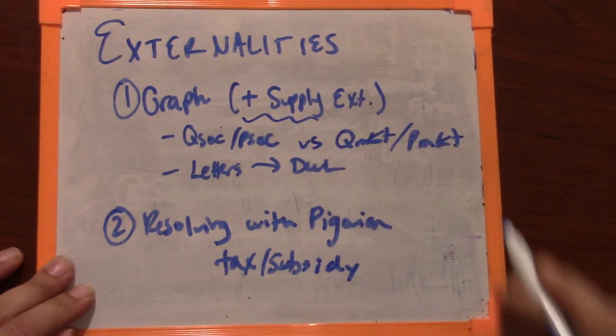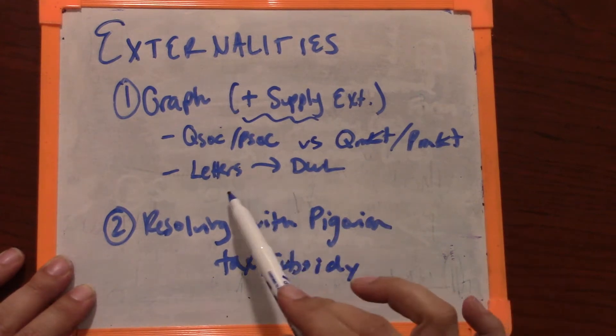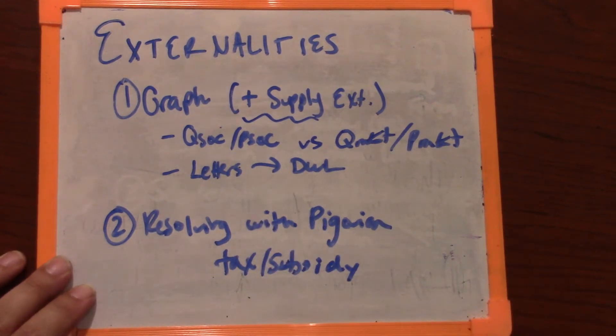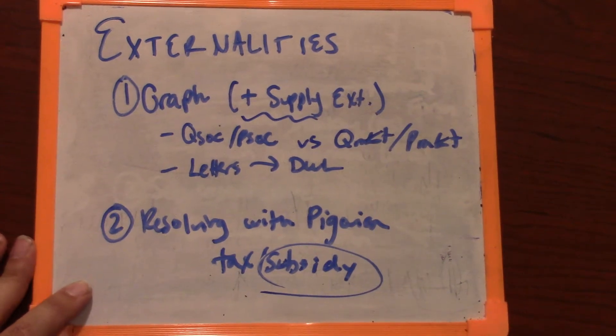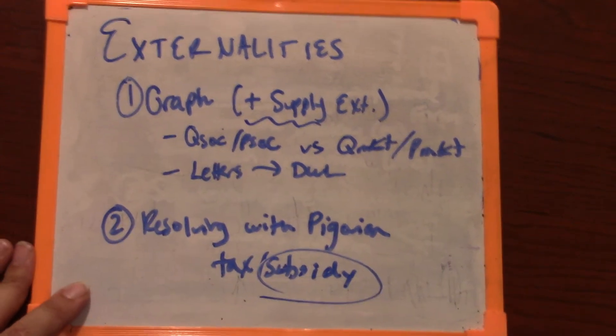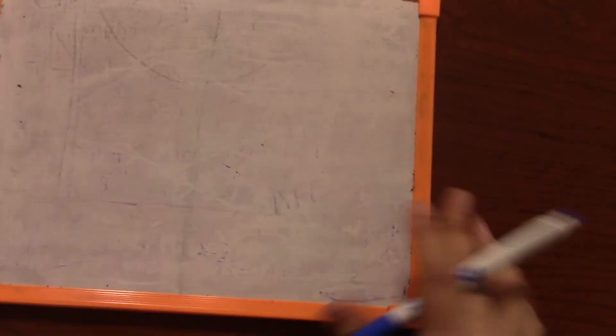And then the cherry on top, how you use letters to arrive at an estimation of deadweight loss. Then after that we'll do a separate graph to talk about resolving this positive supply externality with a Pigovian tax or subsidy. In this case because we want more of the good, we'll be using a subsidy, and that should get you refreshed on all of the tricky graph parts of an externality problem.